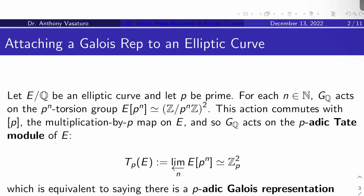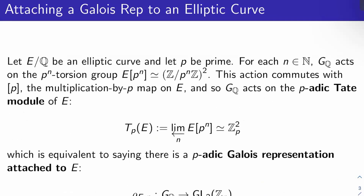So how do you attach a Galois representation to an elliptic curve? You can attach one for each prime, actually. Let E over Q be an elliptic curve, and let P be prime. For each natural number N, the absolute Galois group of Q acts on the P-to-the-N torsion group E[P^N], which is isomorphic to (Z/P^N Z)^2.